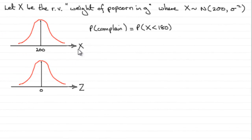Okay then, now for this last part, we've got to work out the probability that someone complains, and that's going to be when the weight of the popcorn is less than 180.